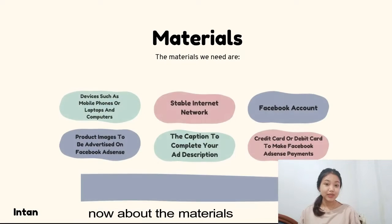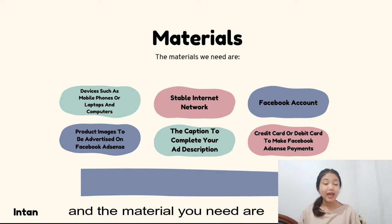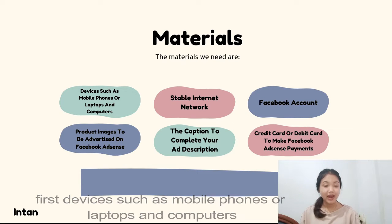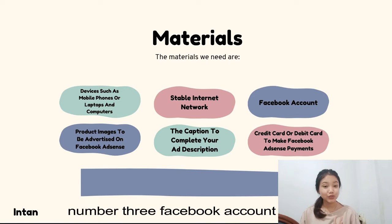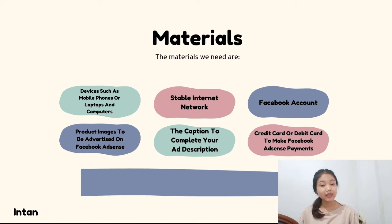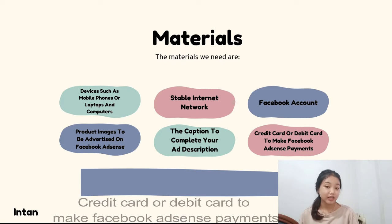Now about the materials. If you make Facebook Ads, you need some materials. The materials you need are: first, a device such as a mobile phone, laptop, or computer; second, a stable internet network; third, a Facebook account; fourth, a product image to be advertised on Facebook Ads; fifth, a caption to complete your ad description; and the last material is a credit card or debit card for Facebook Ads payment.